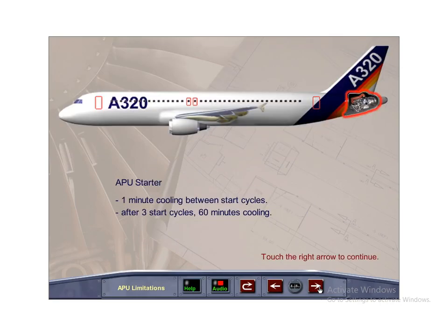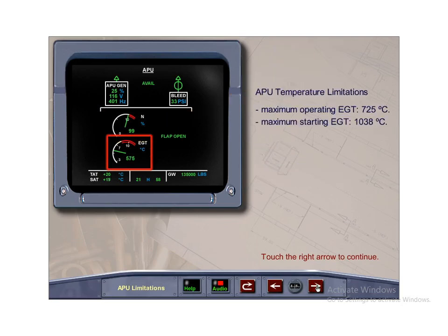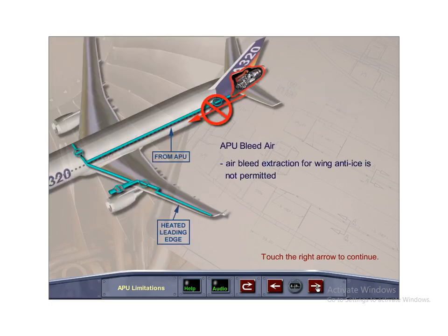There is a maximum one minute cooling interval required between start cycles. After three start cycles, a 60 minute cooling period must be allowed before any further start attempts. The maximum speed limit is 107 percent, at which point automatic shutdown begins. The maximum operating EGT for the APU is 725 degrees. The maximum starting EGT is 1,038 degrees. Air bleed extraction for wing anti-ice is not permitted.